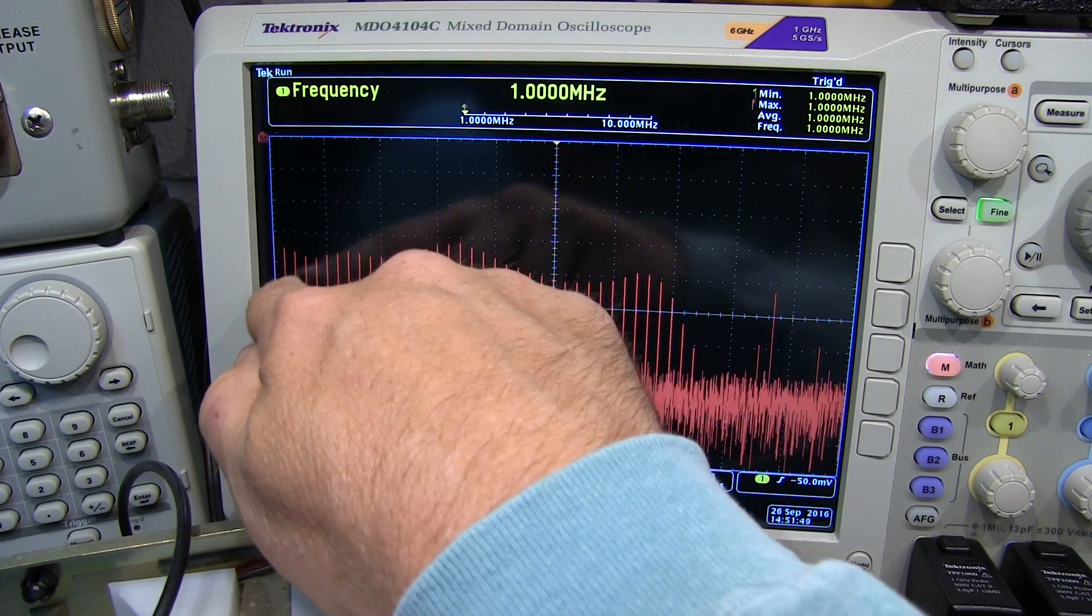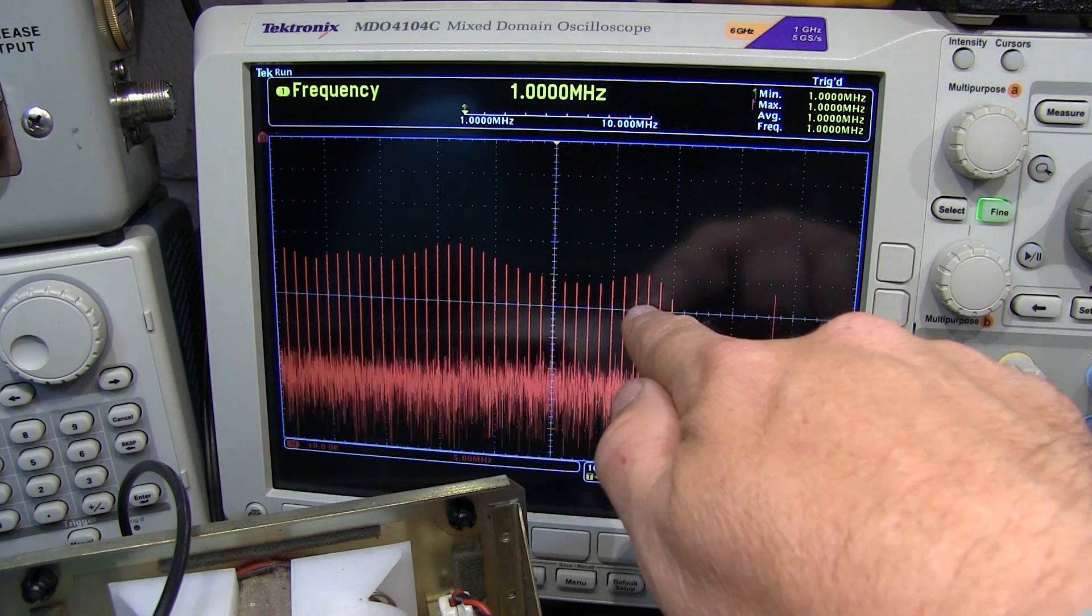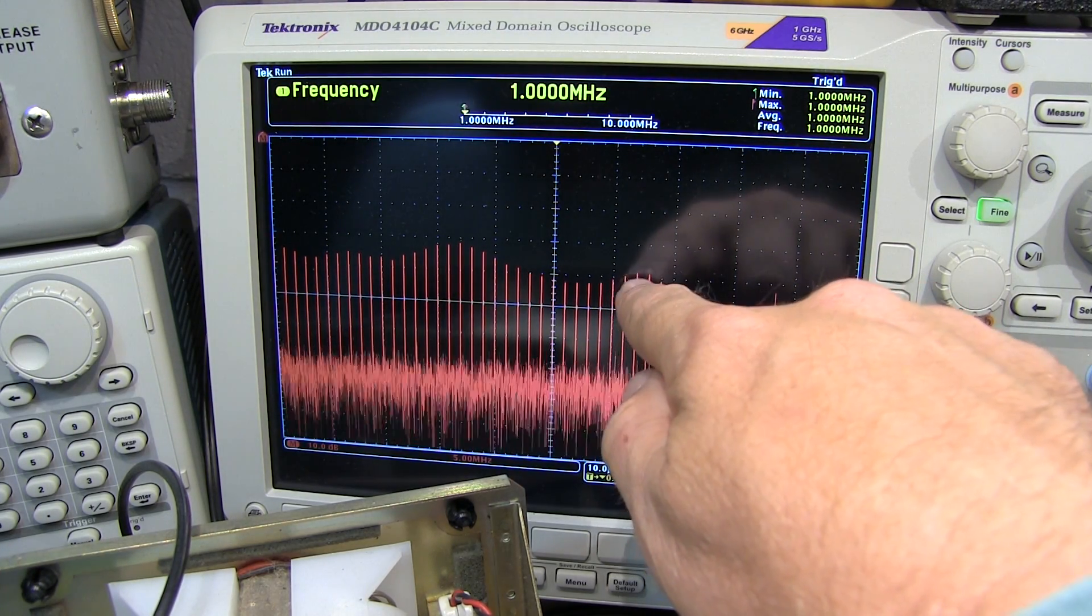So here's the FFT result of that signal. So we've got about 5 MHz per division here. So we can see I've got at every tick mark, 1 MHz, 2 MHz, 3 MHz, 4 MHz, 5 MHz.